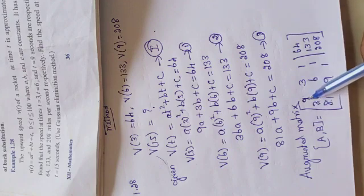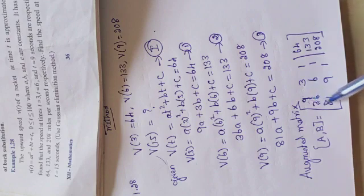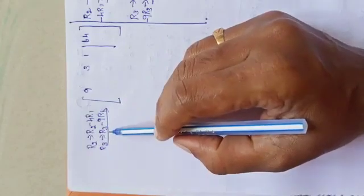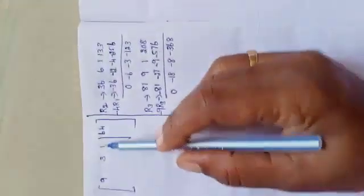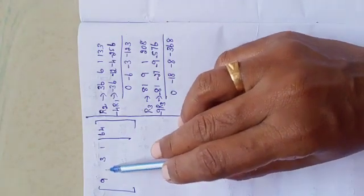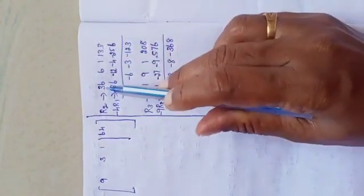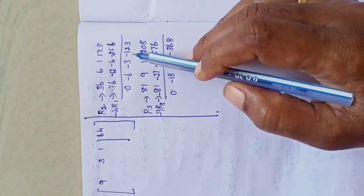R2 → R2 − 4R1 and R3 → R3 − 9R1. R1 stays: 9, 3, 1, 64. For R2: 36, 6, 1, 133 minus 4 × R1 gives −36, −12, −4, −256. Adding: 0, −6, −3, −123.